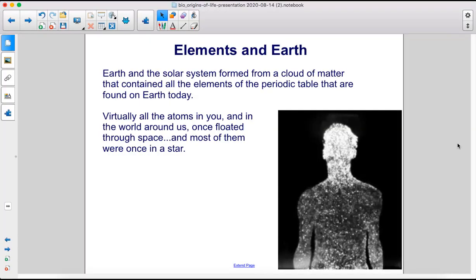Earth and the solar system formed from a cloud of matter that contained all the elements of the periodic table that are found on Earth today. Virtually all the atoms in you and in the world around us once floated through space, and most of them were once in a star.